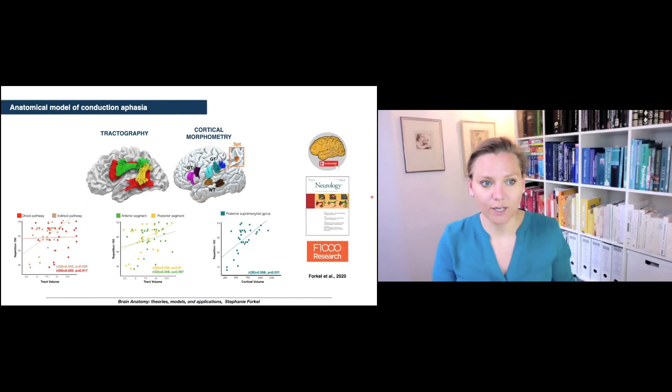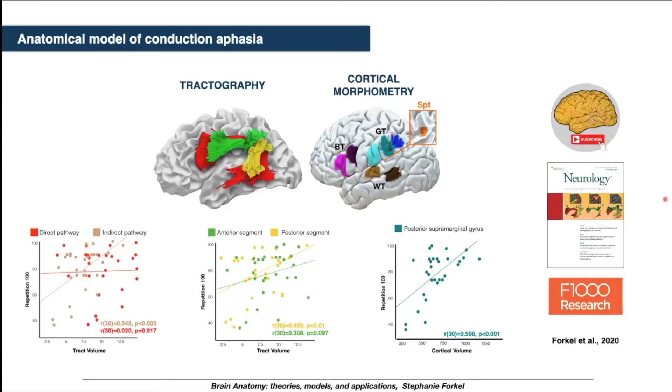We looked at this both in terms of the white matter and the gray matter associated with the language areas, and you can see the images here on the slide, and correlated all of them with repetition deficits. What you can appreciate on the bottom row on the left is that the arcuate fasciculus, the direct segment, which is shown in red on the top image, which is the main straight pathway between Broca's and Wernicke's, did not correlate at all with repetition. But when you look at the indirect pathway, so now we're taking together the green and the yellow, that's the anterior and the posterior segment connecting frontal parietal and parietal temporal language areas, we can see the correlation with repetition.